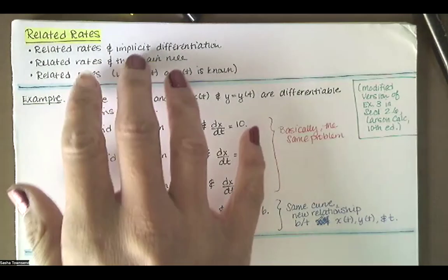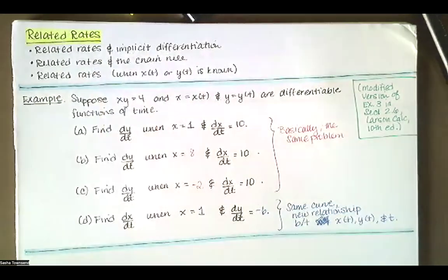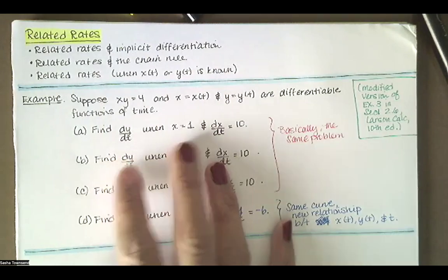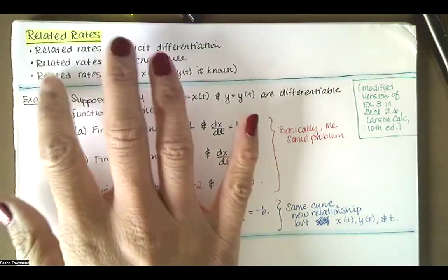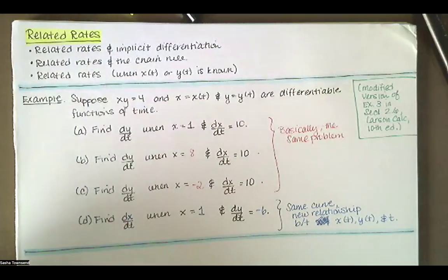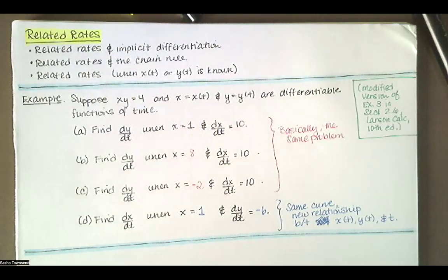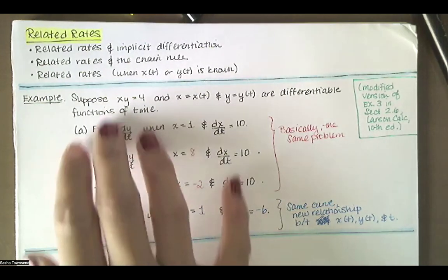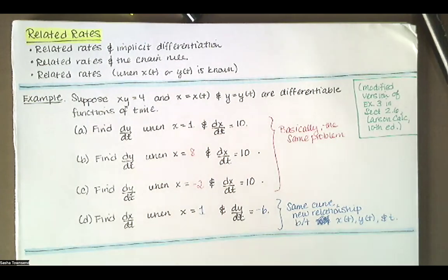In this video we look at a related rates problem and we relate the related rates to implicit differentiation, the chain rule, and we look at a particular problem when x of t and y of t are known. So here's our example. It says suppose that y times x is equal to 4, and x of t and y of t are differentiable functions of time.